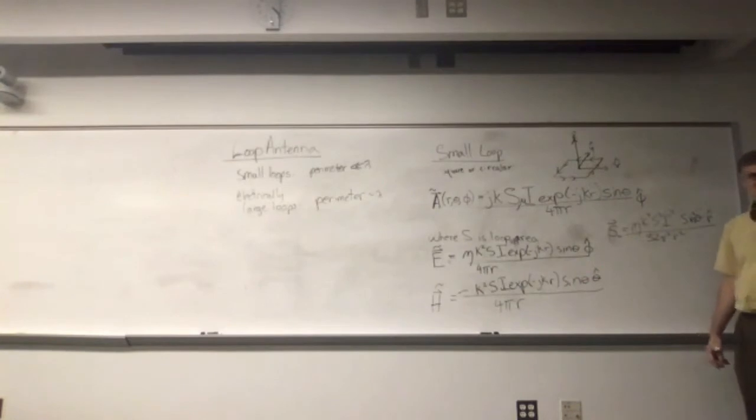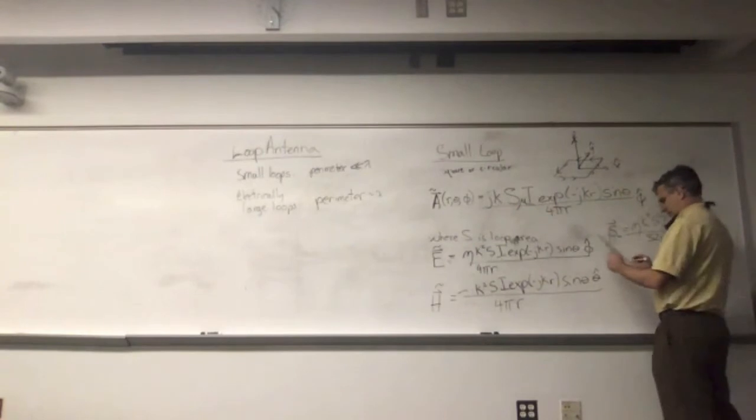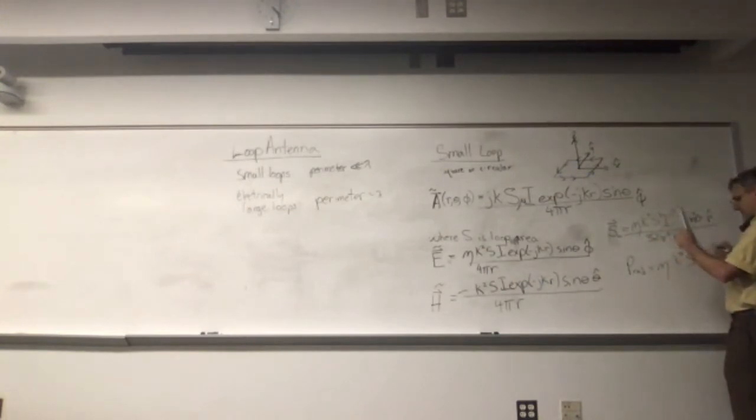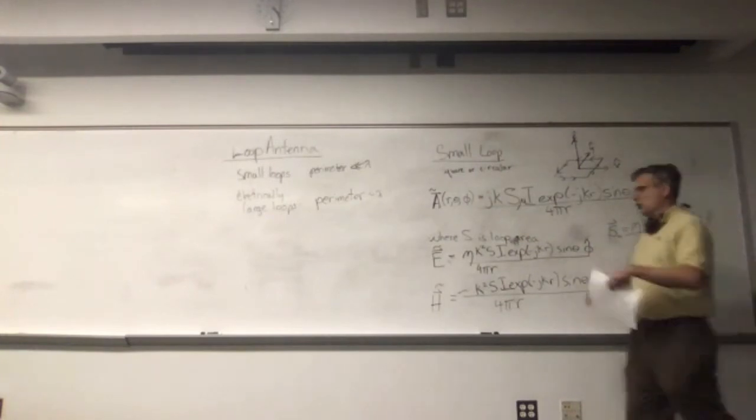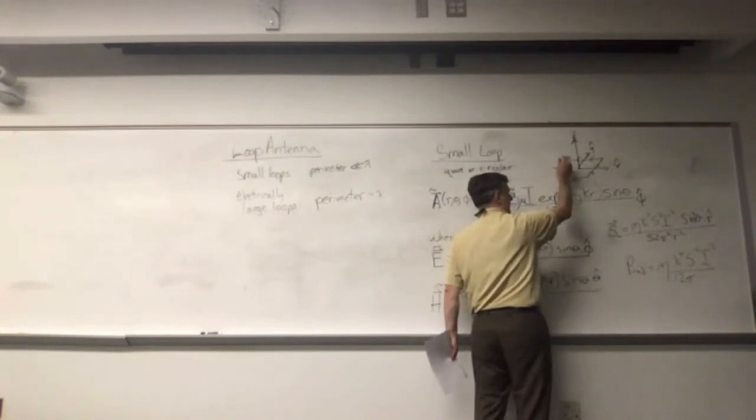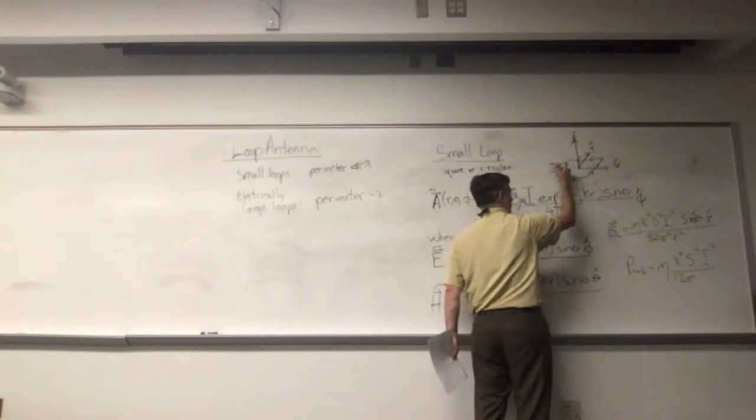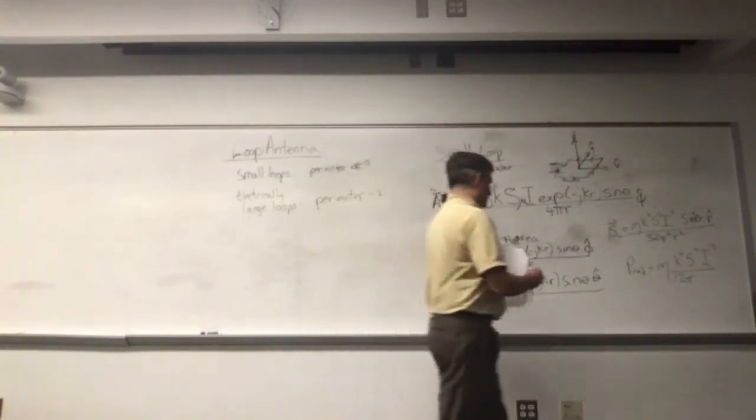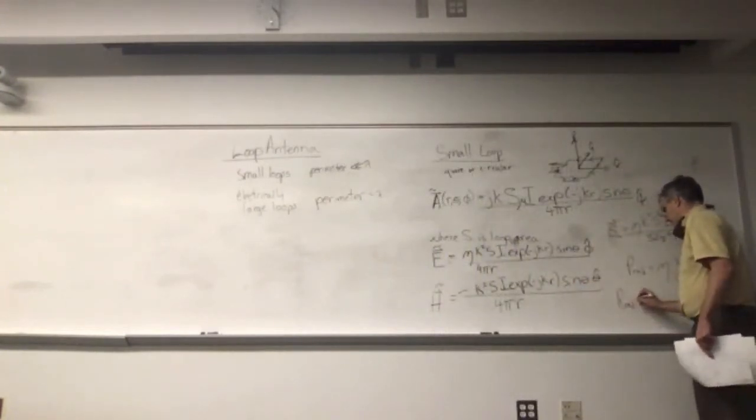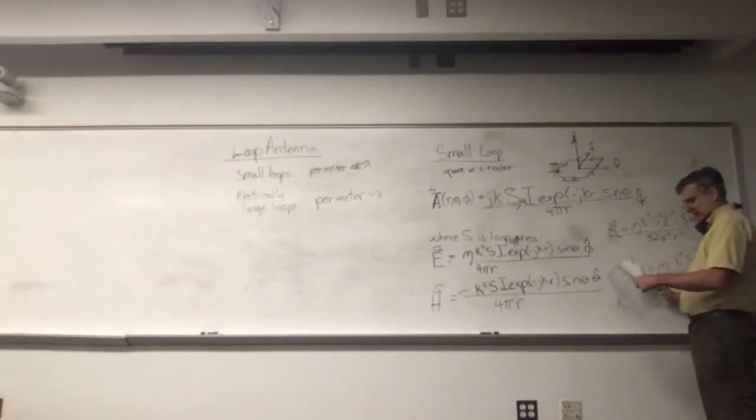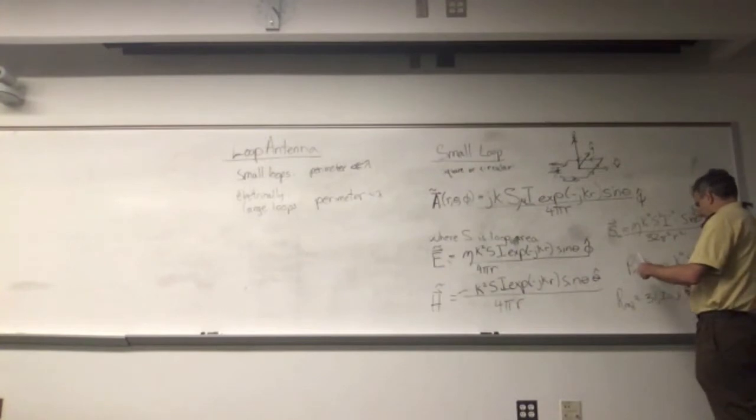The power radiated in this system, if I integrate this expression over 4 pi steradians, is going to be equal to eta k to the fourth S squared I squared over 12 pi. If you know what total radiated power is for a given current flowing around, oscillating, the radiation resistance would be one-half I squared R rad, which means the radiation resistance is about 31,200 S over lambda to the fourth ohms.